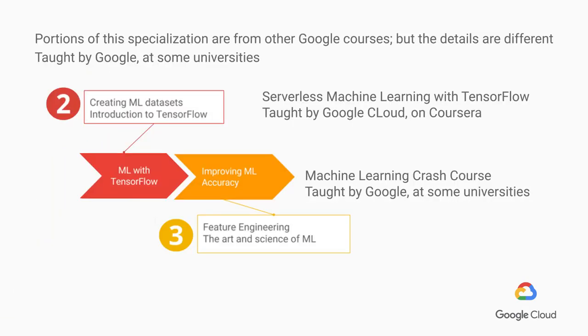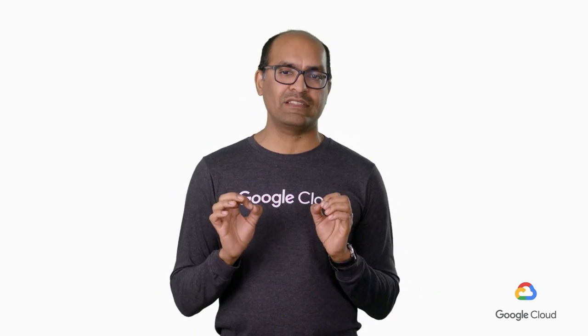Now, you may have encountered some of this material before, especially in the first four courses. For example, in the courses on creating machine learning data sets and on TensorFlow basics, some of the slides will be a repeat of serverless machine learning with TensorFlow available on Coursera. Similarly, if you encountered Google's machine learning crash course — an internal Google course also taught on some university campuses — you might find some of the material on feature representation and the art and science of ML to be familiar. In spite of this, the details are quite different, so don't skip it completely. Treat these courses as a useful refresher and make sure you still remember the ideas presented in those sections.